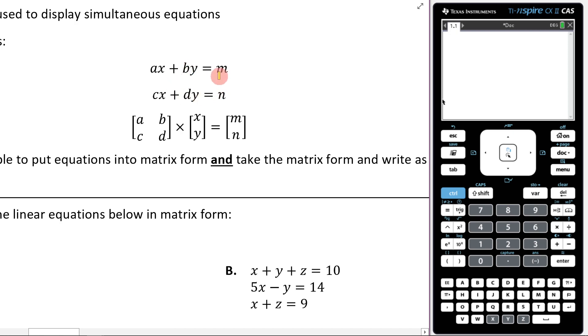We can take these simultaneous equations and write them in matrices. So let's have a look what's happening here. So what we're doing is we're taking this, this, this, and this.